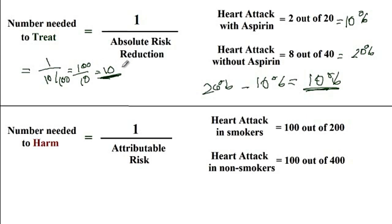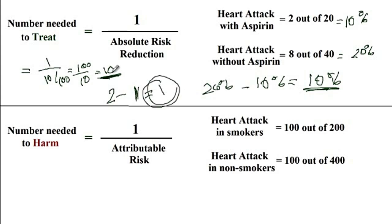Let's verify that answer. If you treat 10 patients with aspirin, 10% of 10 means 1 patient will develop a heart attack. If you do not treat those patients, 20% of 10 equals 2 patients will develop a heart attack. So 2 minus 1 equals 1 — there is one less patient who develops a heart attack when 10 patients are treated with aspirin.